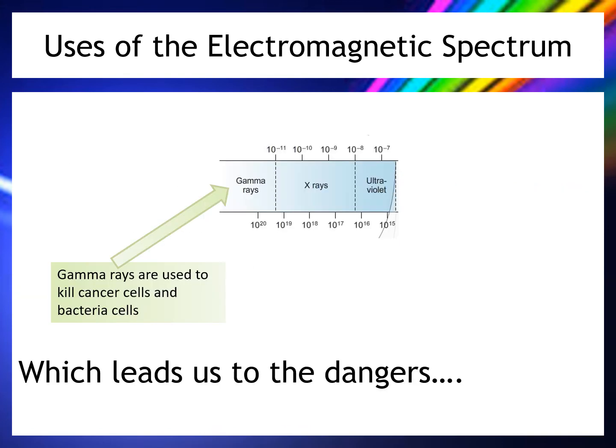A final use is that gamma rays can be used to kill cancer cells and bacteria cells. This leads nicely into understanding the dangers of parts of the electromagnetic spectrum.